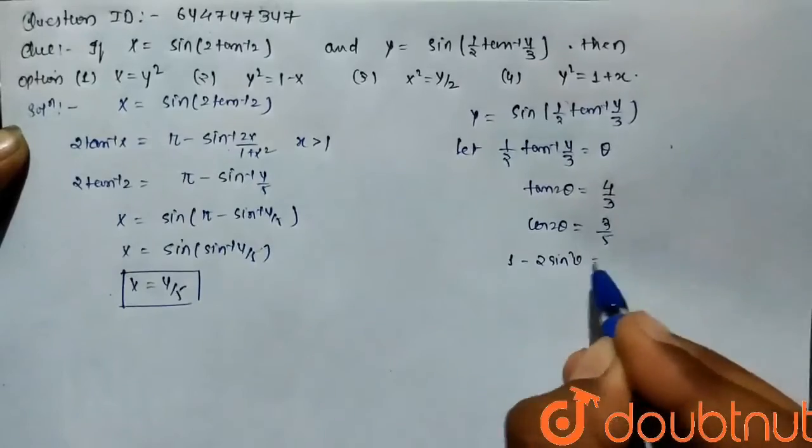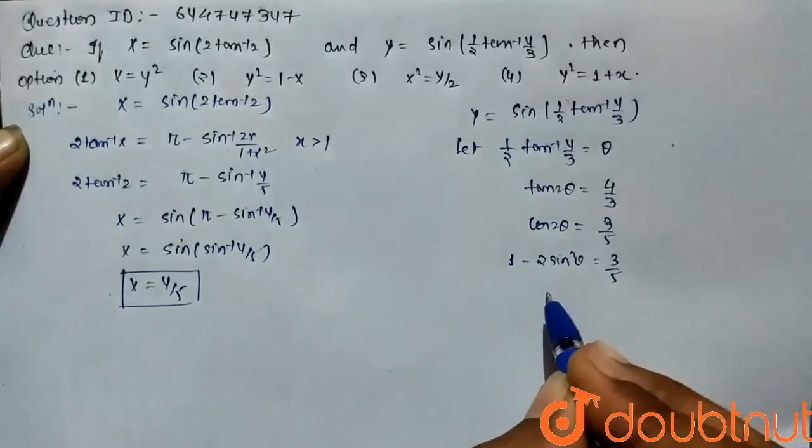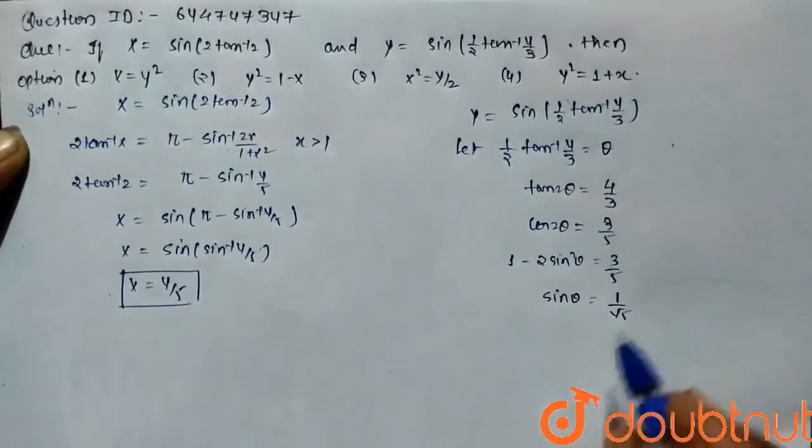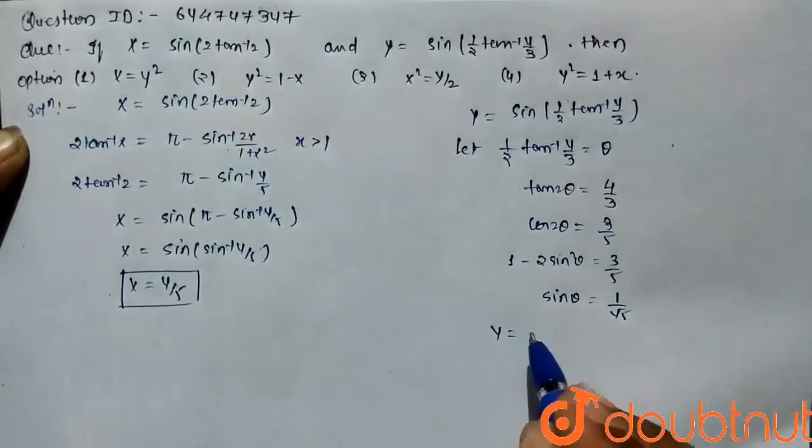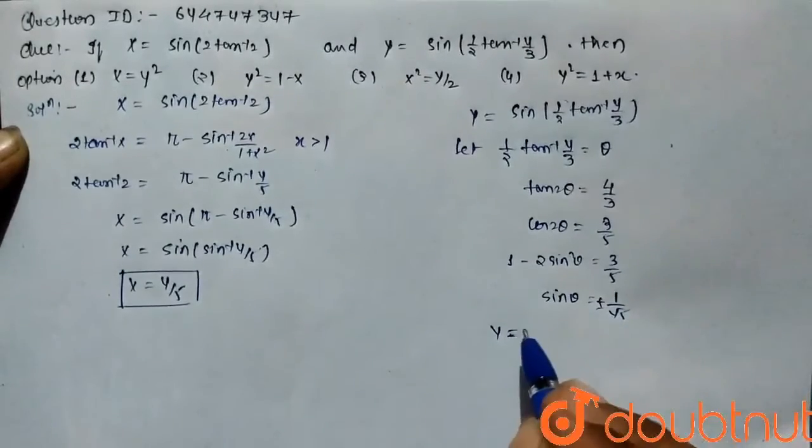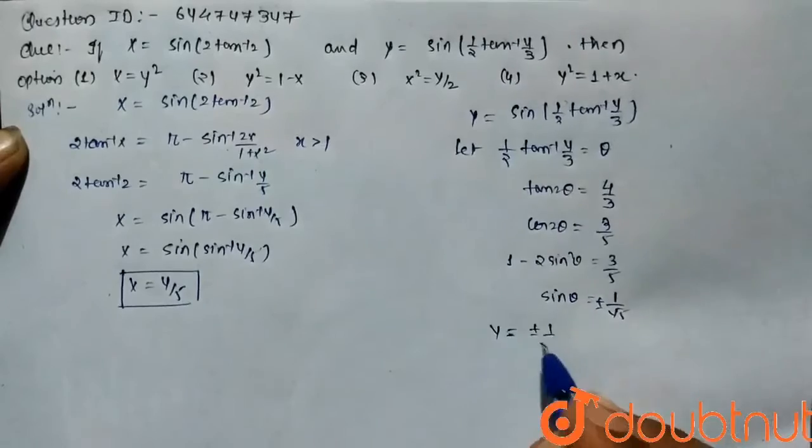So the value of cos 2 theta equals 1 minus 2 sin square theta. On solving it, the value of sin theta equals 1 by root 5. Hence the value of y equals plus minus 1 by root 5.